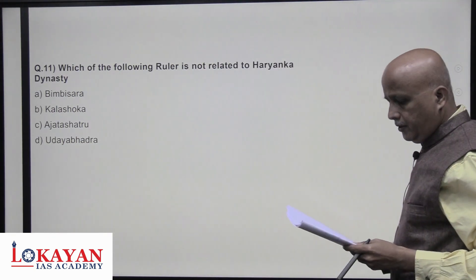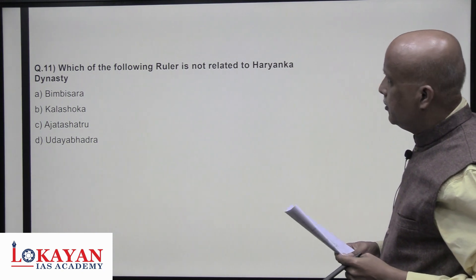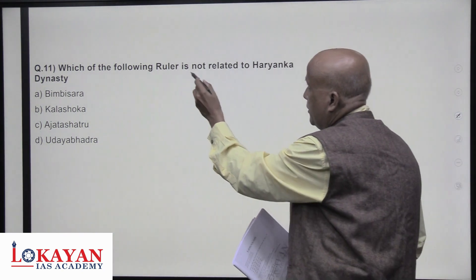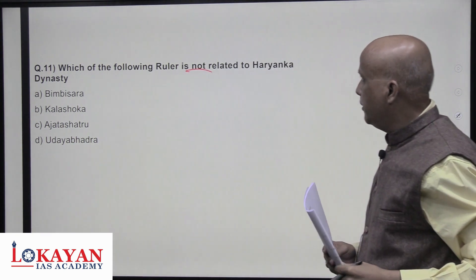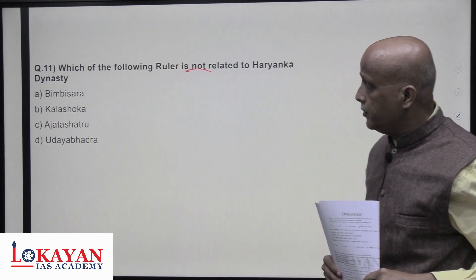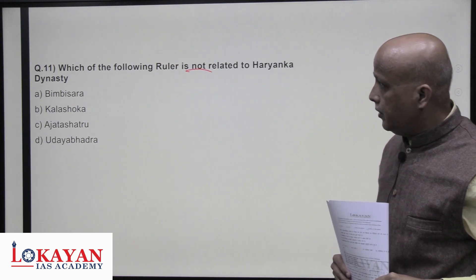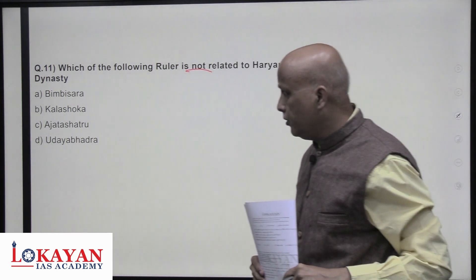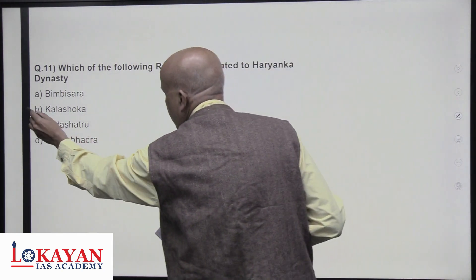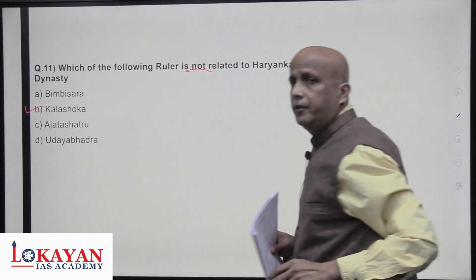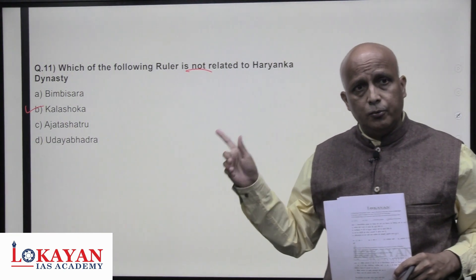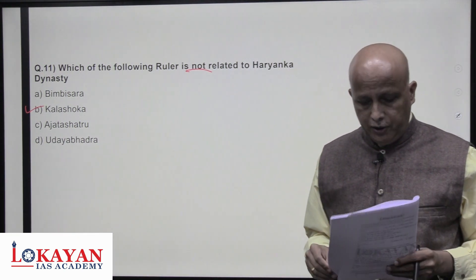Which of the following rulers is not related to the Haryanka dynasty? One of the first important dynasties in Magadha is the Haryanka dynasty; Bimbisara is the founder, followed by Ajatashatru. Answer is B — Kalashoka — because after the Haryanka dynasty, the next famous dynasty was the Shishunaga dynasty, and Kalashoka belonged to the Shishunaga dynasty.